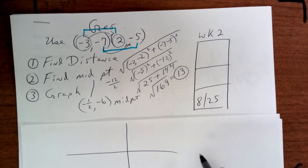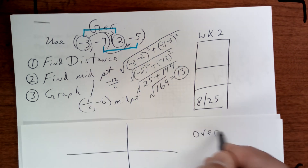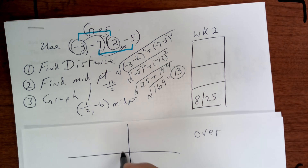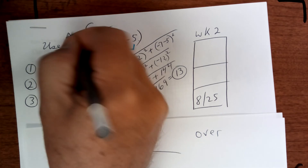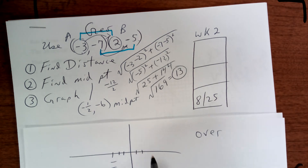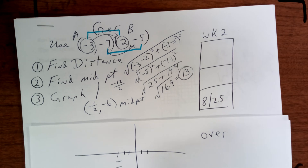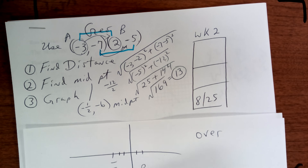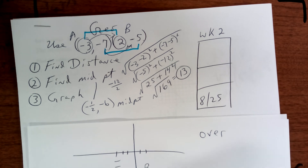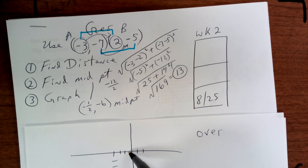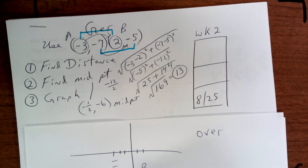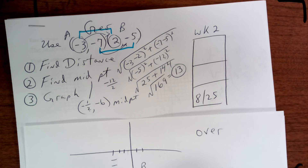Remember, next week you have a test. Now let's graph it. You're going to go negative 3, then down 7 — we'll call this point A. The next one is over 2 and down 5. So the distance from here to here is 13. For the midpoint, that's negative 1 half, which is halfway, then down 6. It doesn't look perfect, and that's why it's good to use graph paper — this part should be equal to this part.